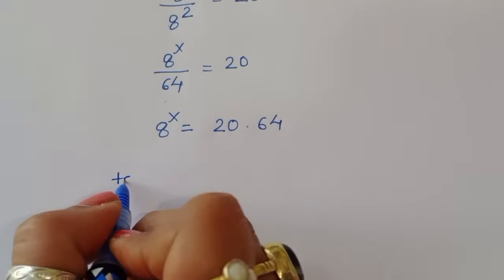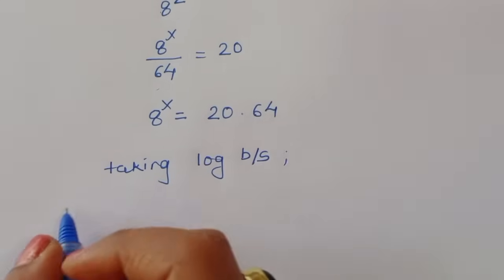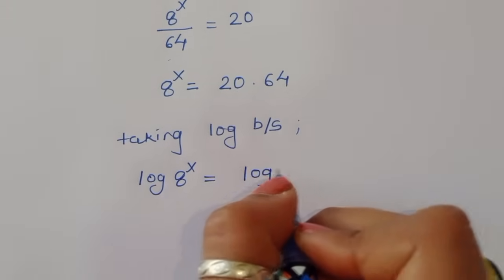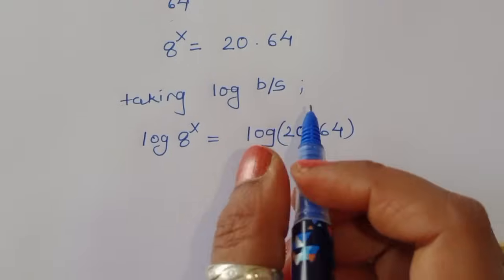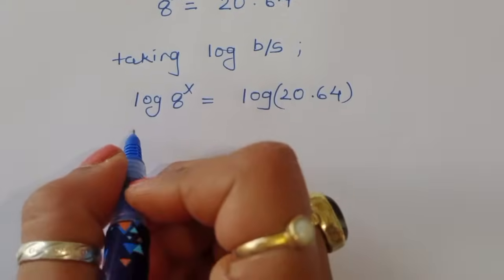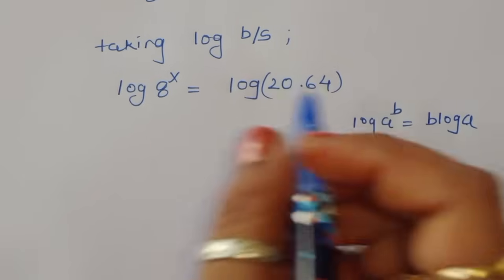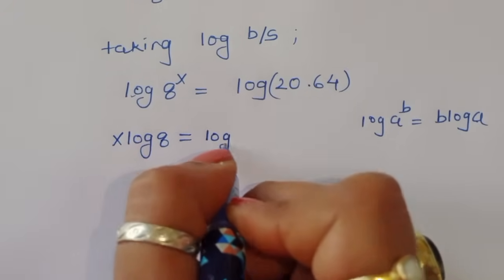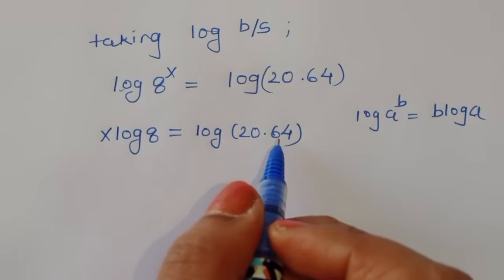To find the value of x, we take log on both sides. We get log of 8 power x is equal to log of 20 times 64. Using the formula log of a power b equals b times log of a, we get x log of 8 is equal to log of 20 times 64.